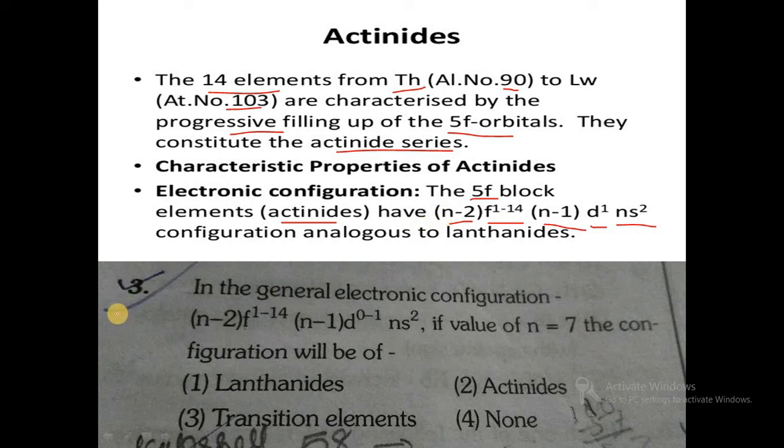In objective type questions, they may ask: if the general electronic configuration is (n-2)f1 to 14, (n-1)d0 to 1, ns2, and the value of n equals 7, which series is it? The options are lanthanides, actinides, transition elements, or none of these. The correct answer is actinides. When n equals 7, the configuration becomes 5f1 to 14, 6d0 to 1, and 7s2. This is the general electronic configuration of the actinides.